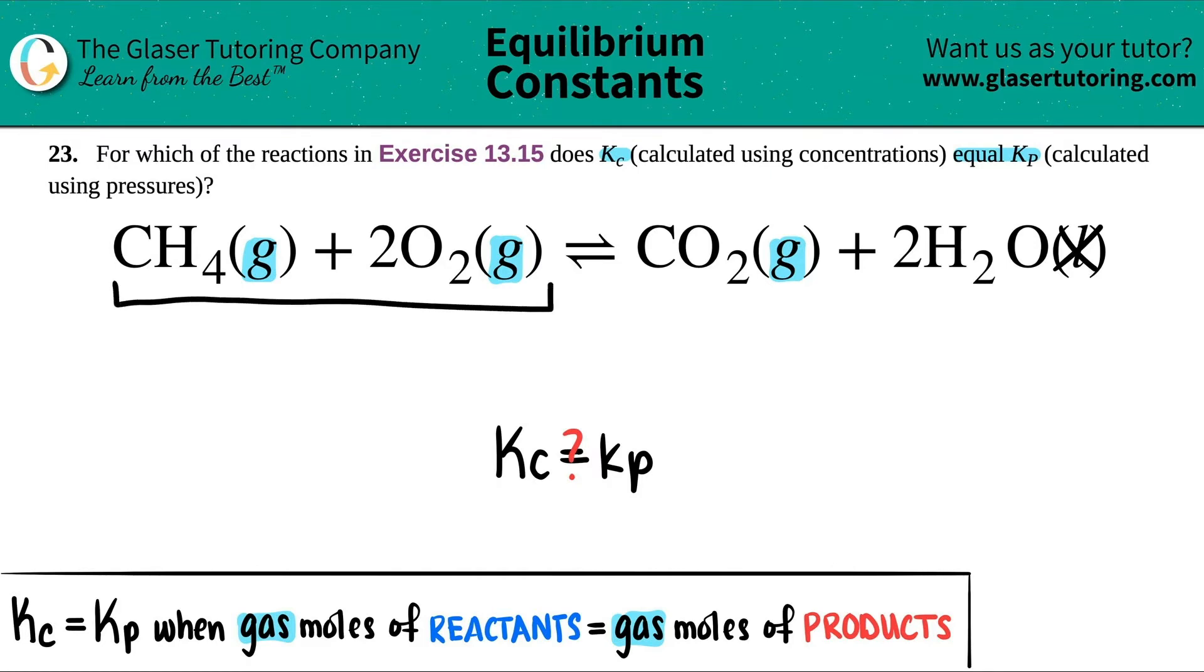Now I need to tally up the total number of moles on the left side and tally up the total number of moles on the right side of the gases. Well, how are we going to find out the moles? That's just the coefficient values, right? So here I see that I have no number in front of the CH4. That means I have one mole. They told me that I have two moles here. So one, literally plus two, one plus two, I have a total of three moles of gas on my reactant side.